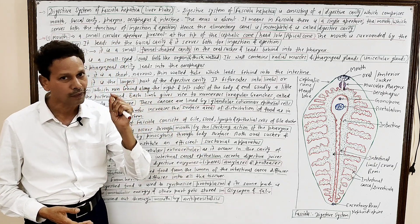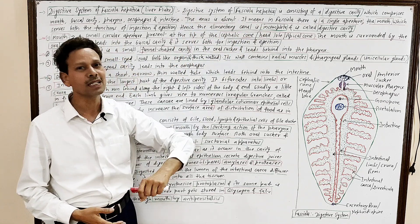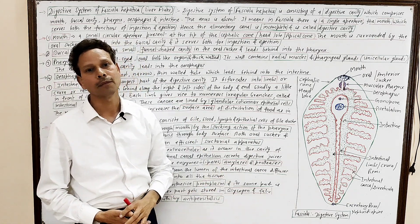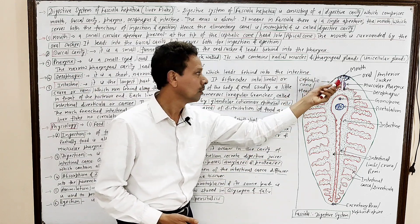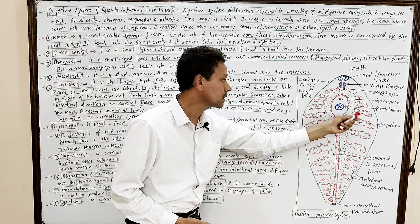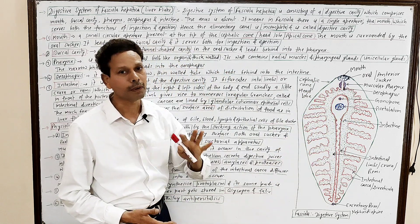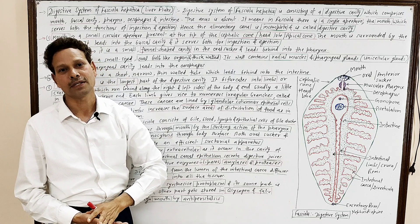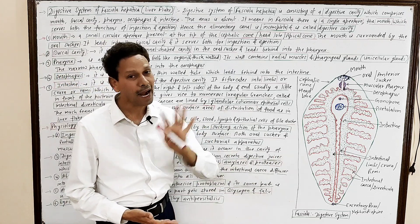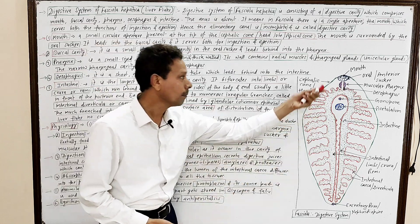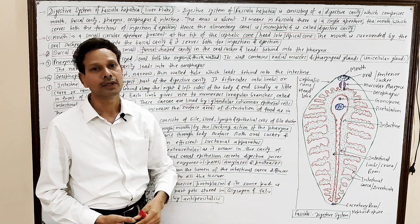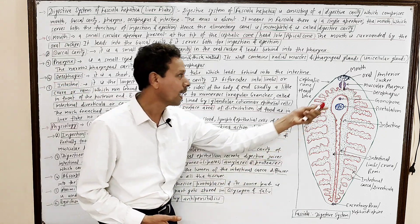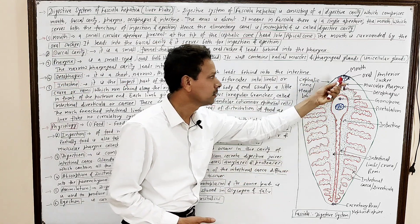The digestive system of Fasciola consists of a digestive cavity involving the following parts: mouth, buccal cavity, pharynx, esophagus, and intestine. The mouth serves both ingestion and egestion, as there is no anus, so the alimentary canal is incomplete. That is why the digestive system is named a digestive cavity.